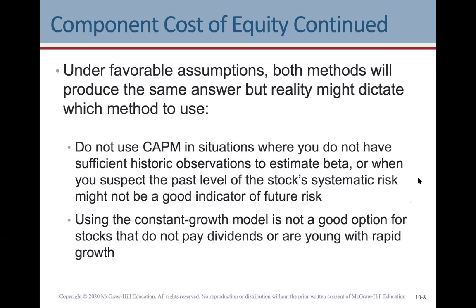Events like the war in Ukraine, for instance, have had a drastic effect on stock and capital markets. Events like that can cause significant changes in determining risk for a corporation. Using the constant growth model is not a good option for stocks that don't pay dividends, or stocks that are young or new with rapid growth, because that growth rate is probably going to change in the future.